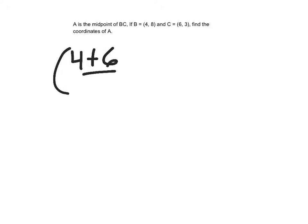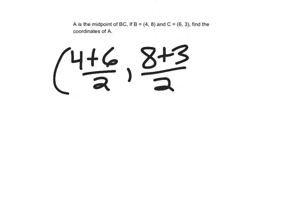So that's what we're going to do here. We're going to find the average of the x-coordinates. So we're going to say 4 plus 6 over 2, and we're going to find the average of the y-coordinates. So I have 8 plus 3 over 2.